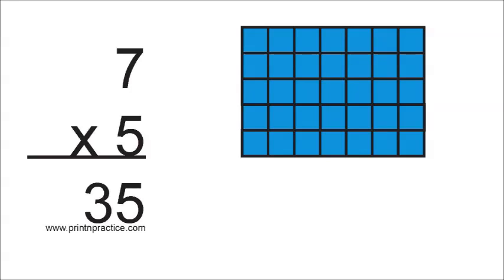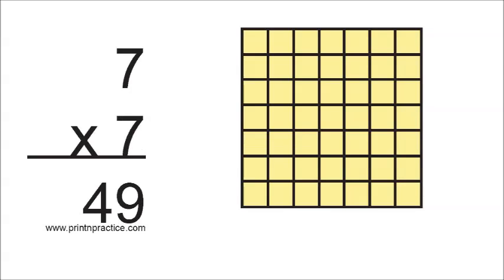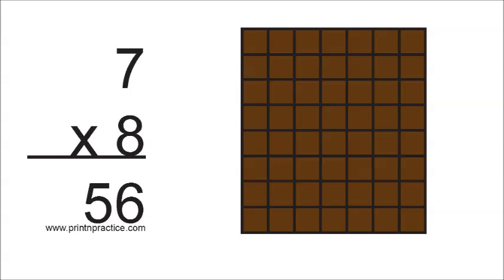7 times 5 are 35. 7 times 6 are 42. 7 times 7 are 49. 7 times 8 are 56.